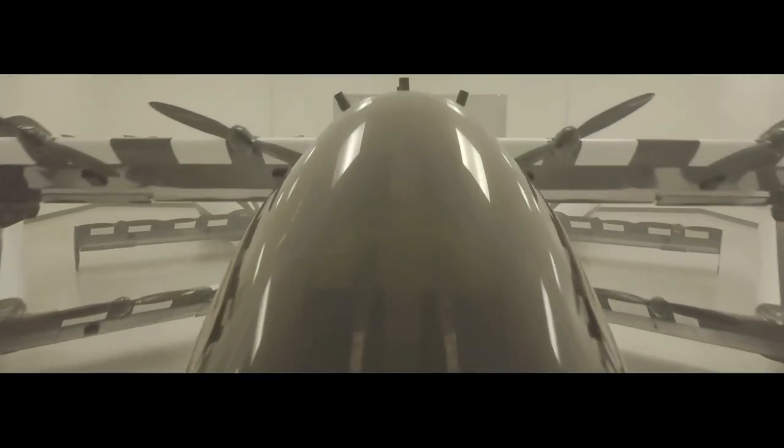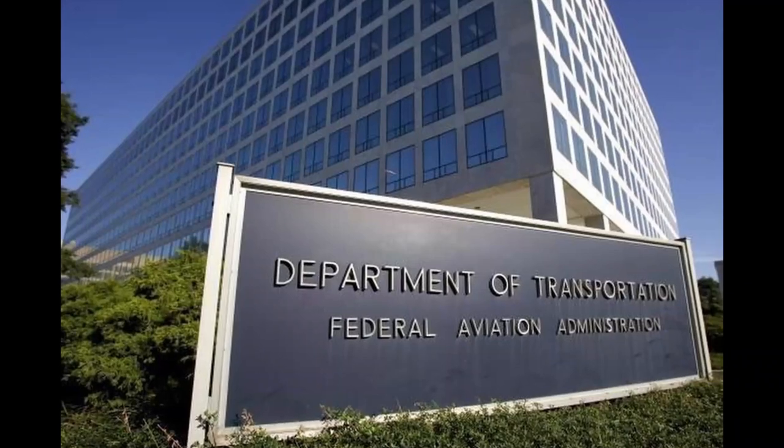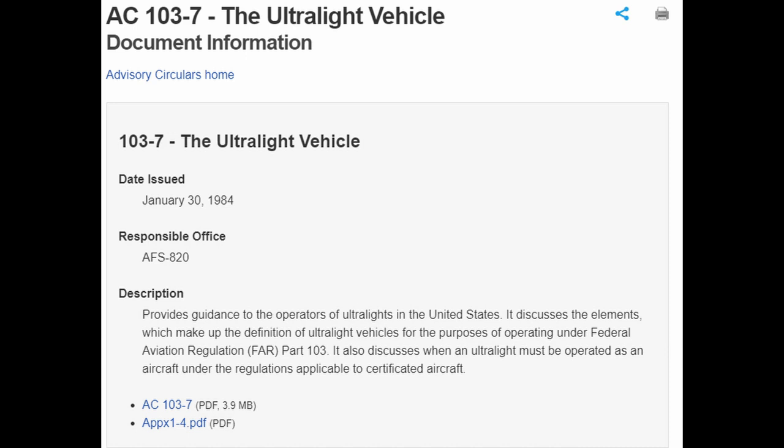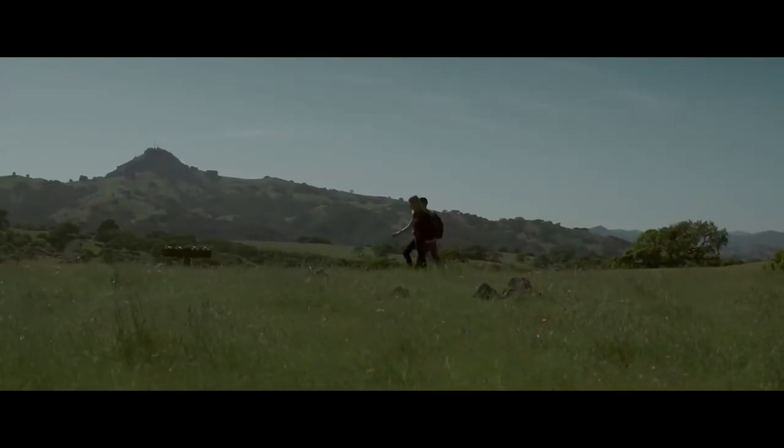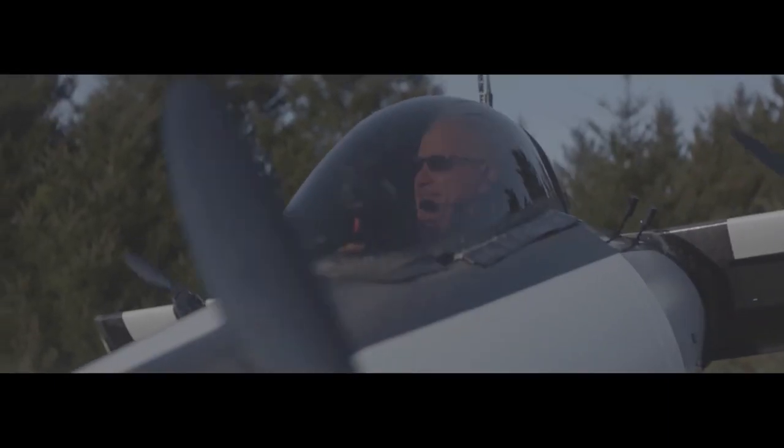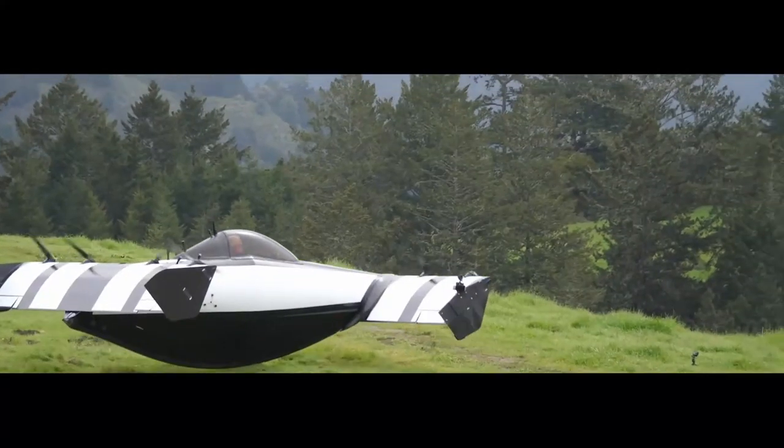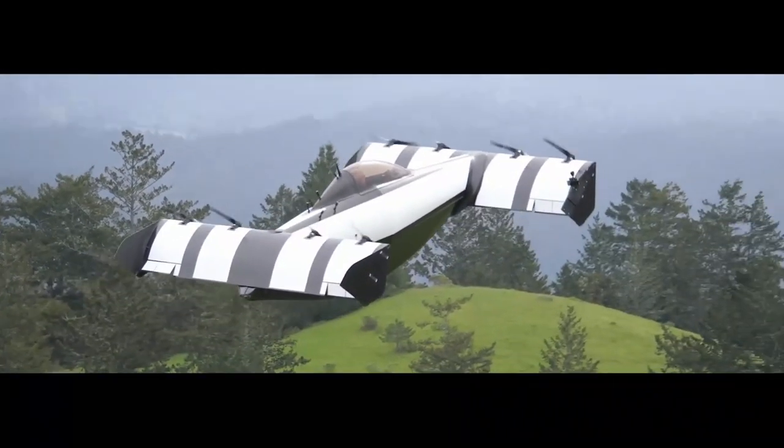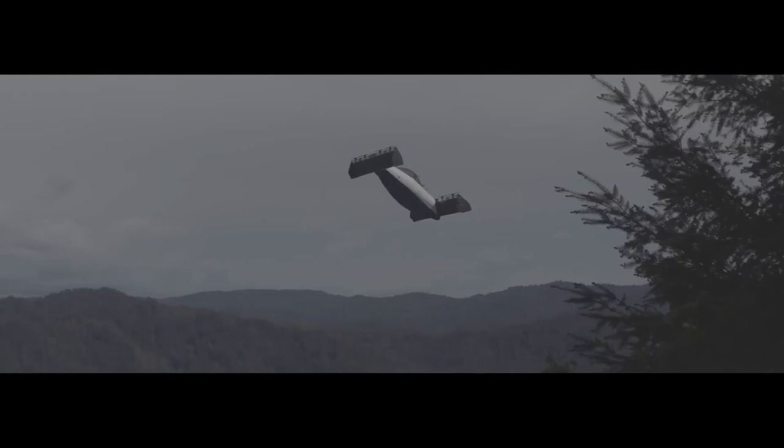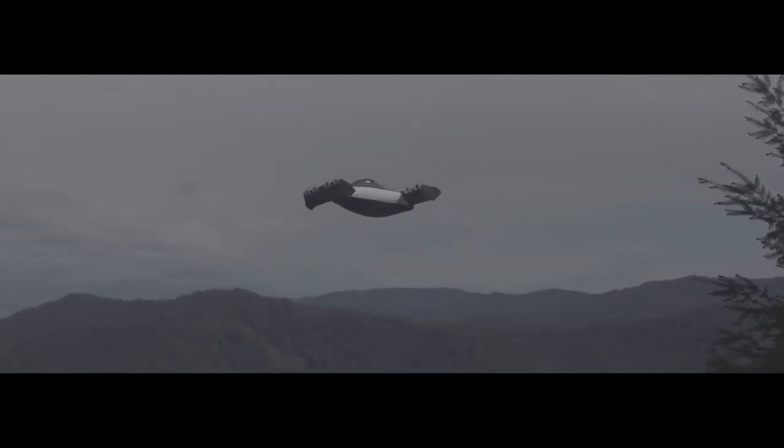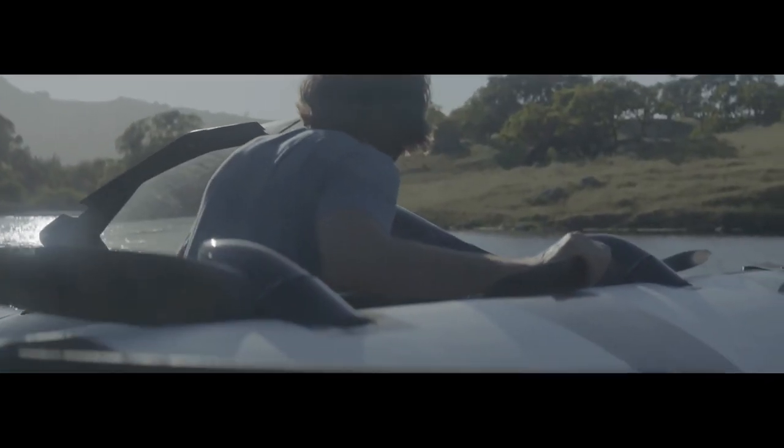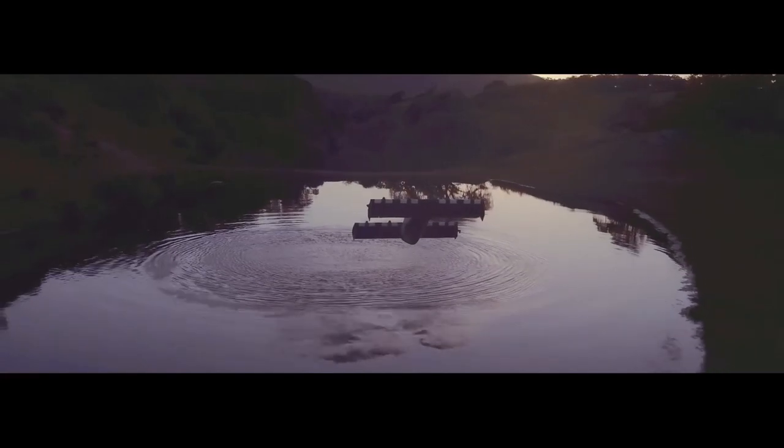The present design developed by Opener falls under Part 103. A FAA Part 103 legal aircraft can be sold without the need to go through a rigorous certification process, but this also severely restricts the role of the aircraft to being just a recreational one. It also limits the occupancy to just one person and the empty weight limit to 115 kg. The Blackfly weight is slightly over that threshold—the aircraft weighs 142 kg—but because it is an amphibious ultralight it still qualifies for Part 103 as the weight restriction for amphibious aircraft is higher.